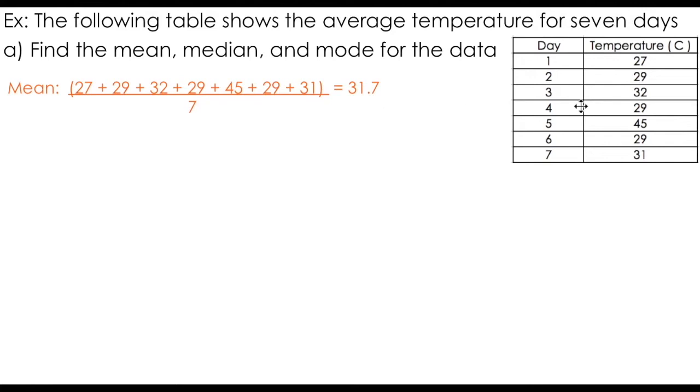So I can say the average temperature over the course of seven days was 31.7 degrees Celsius. To find the median, writing my values out from least to greatest looks like this. What I can do is cross off one data value on each end of the set until I've narrowed down the middle of the data. In this case, the middle of my data set is 29 degrees Celsius. That tells me that half of the temperatures were above 29 degrees Celsius and half were below.